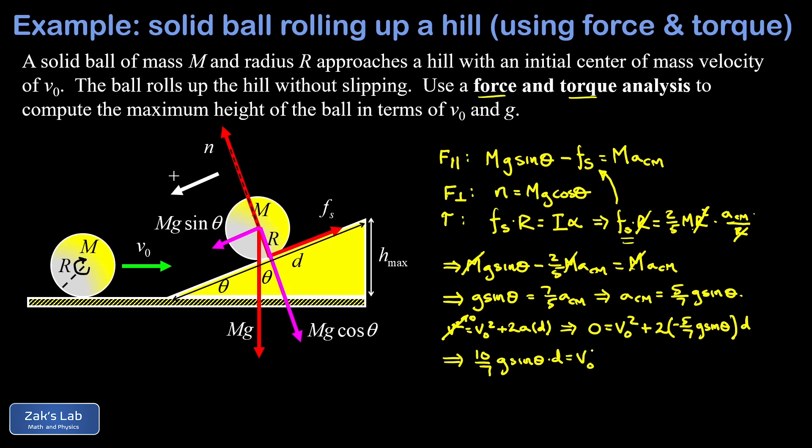And now here's sort of the final trick of the problem. What we really want is the maximum height, we don't want that d. But if I look at the trigonometry in the picture, d times the sine of θ is equal to the maximum height, and I see d times the sine of θ right here, so that's actually h max.